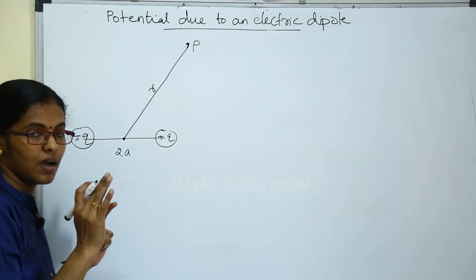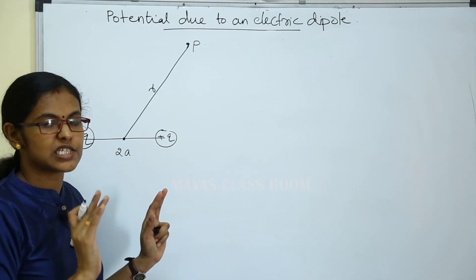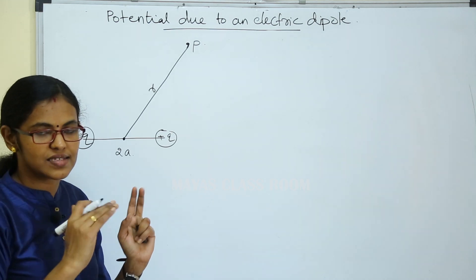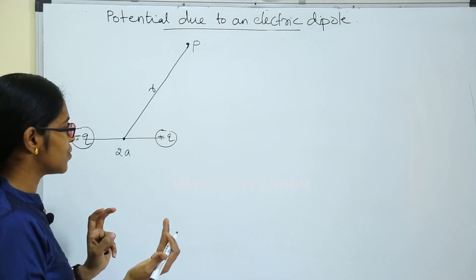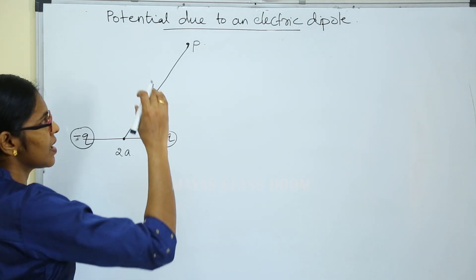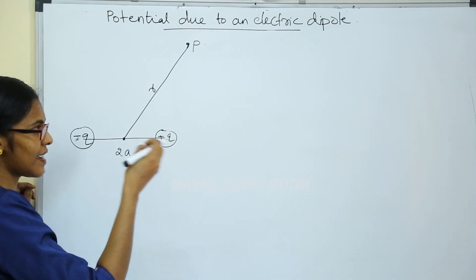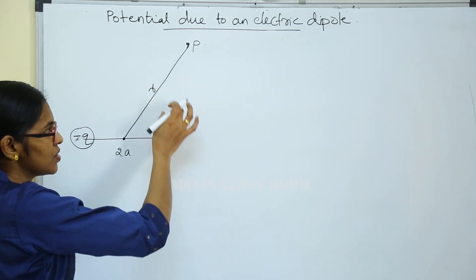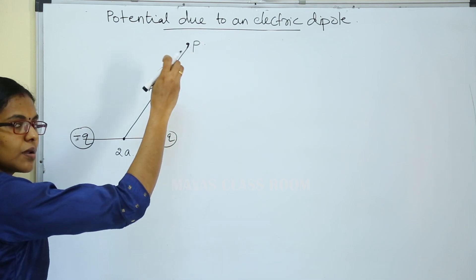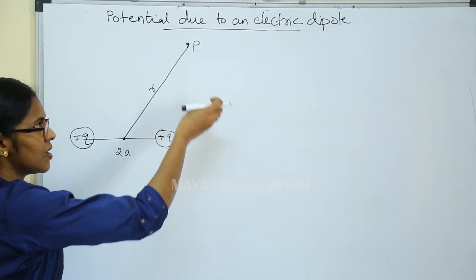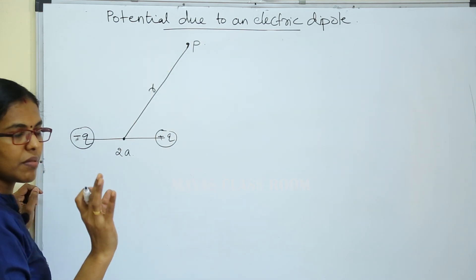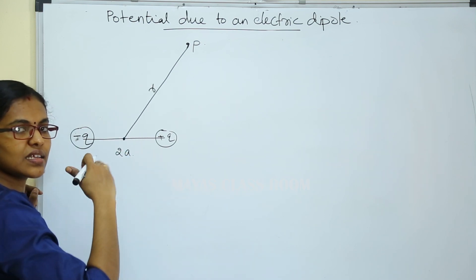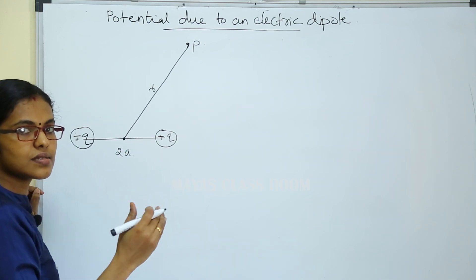We will learn about the electric dipole and the axial line. We will consider a point on the axial line and the equatorial line.